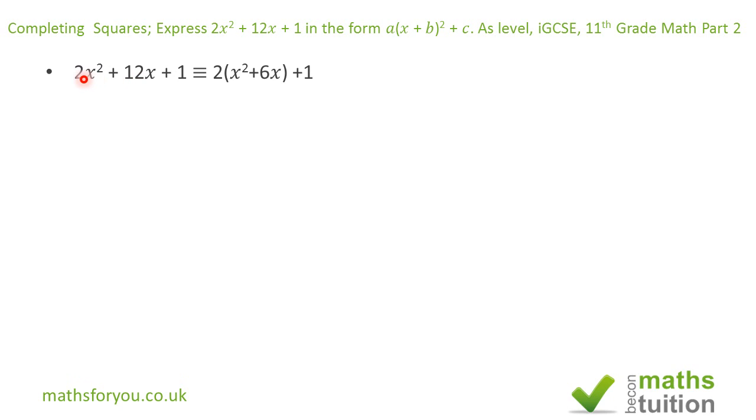So 2(x² + 6x) + 1, which is the same as 2x² + 6x + 1. Now, this is 2x² + 12x + 1, all right?